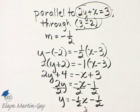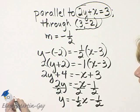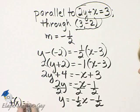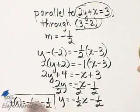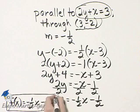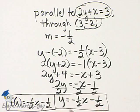We want to use function notation. So instead of y, I'll just call it f of x. So f of x is equal to negative 1 half x minus 1 half. It's the same thing. I'm simply using function notation. Instead of y, I called it f of x.